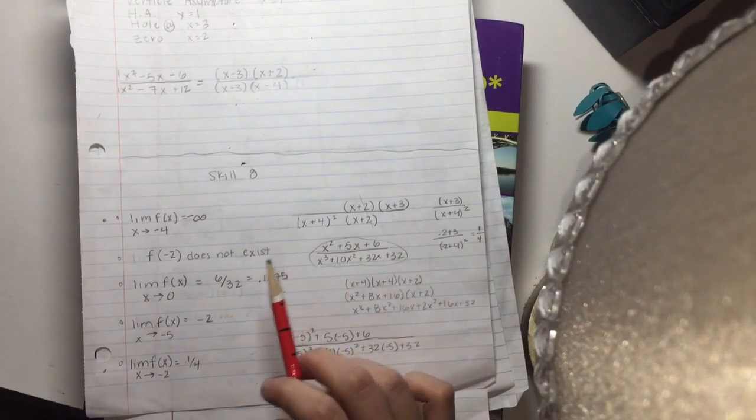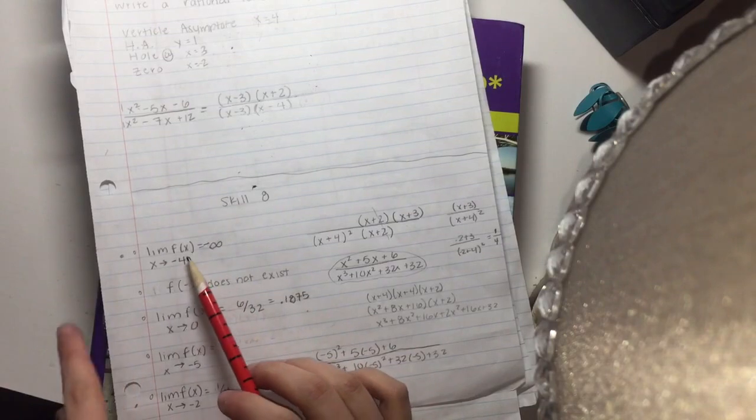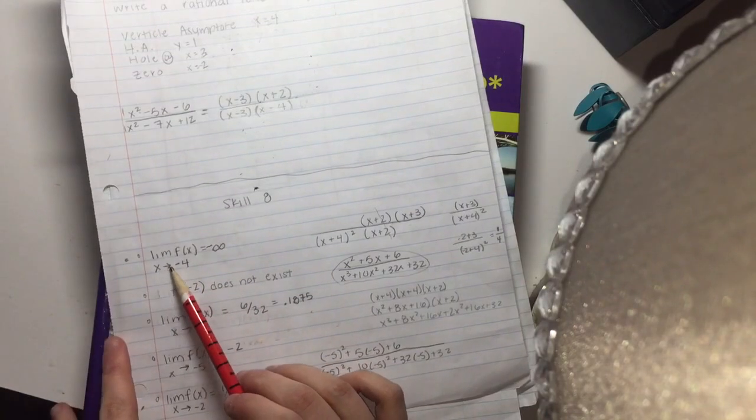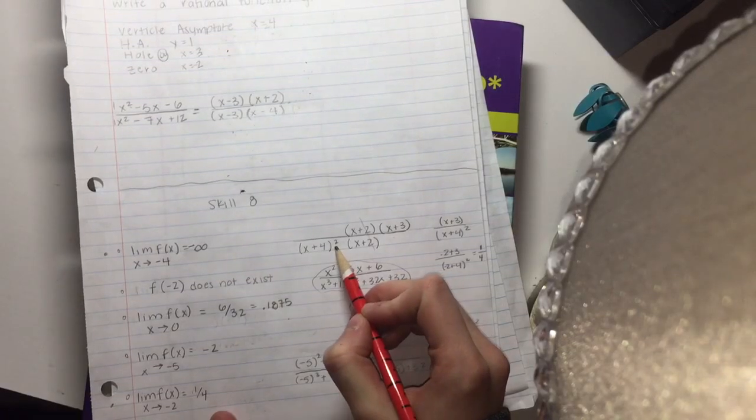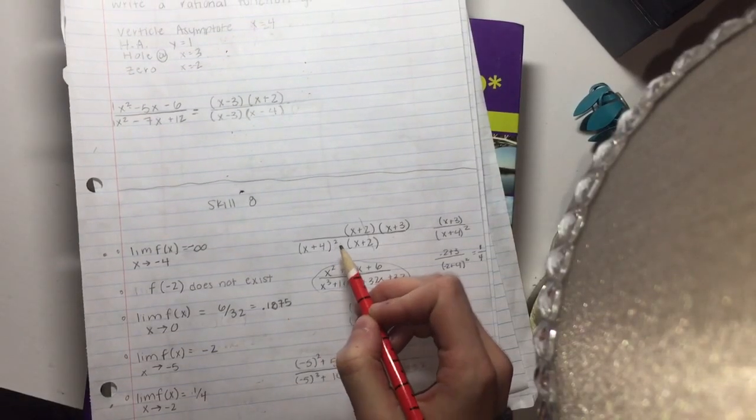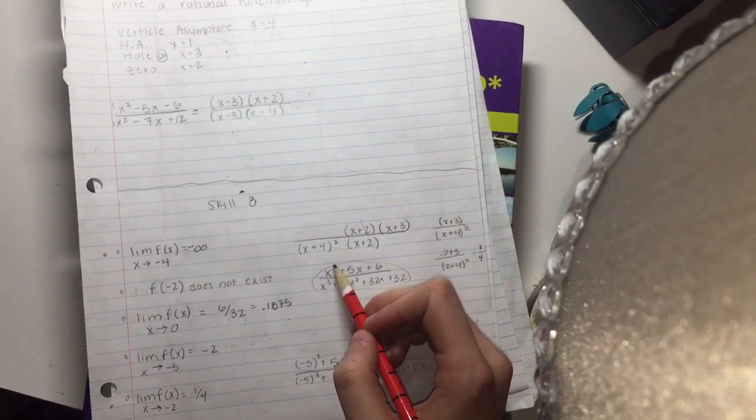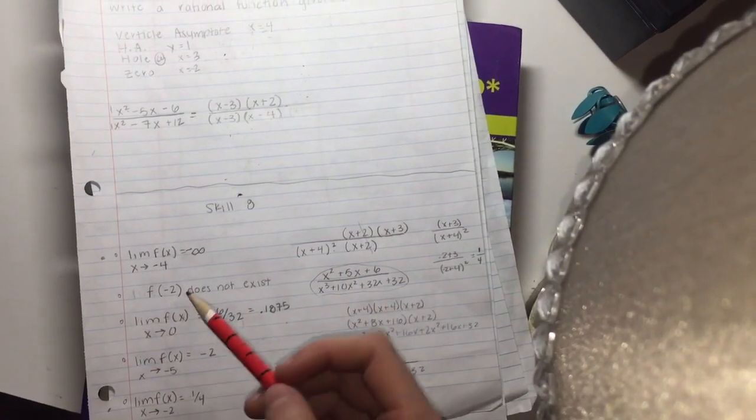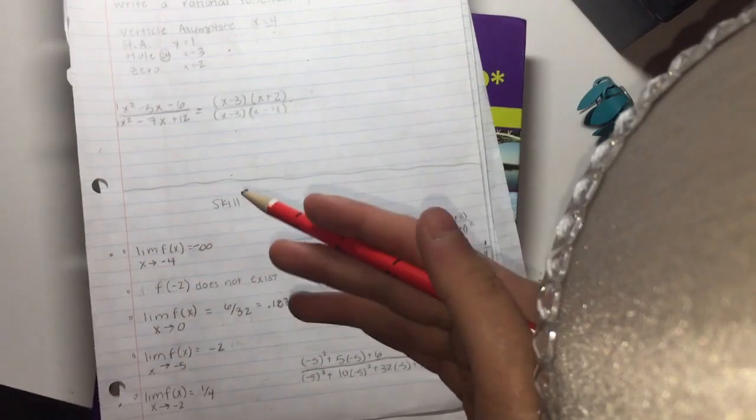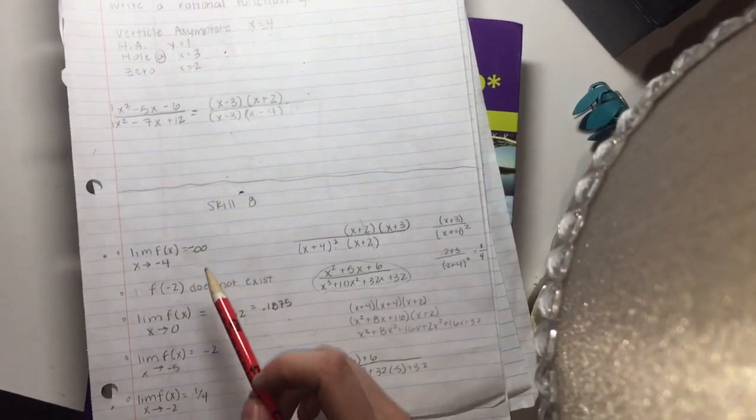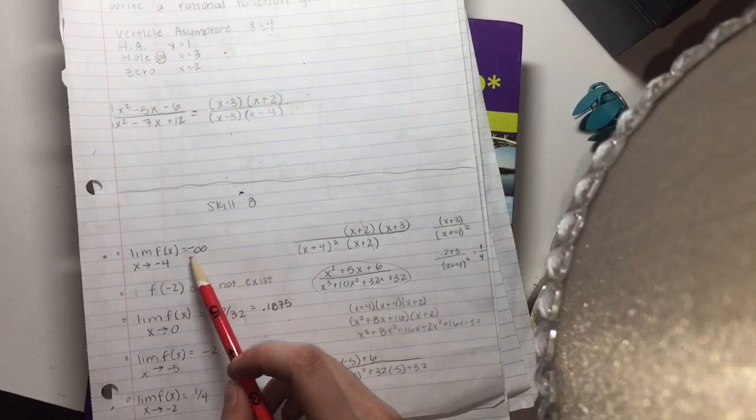So first of all, I have to find out the limit of f(x) when x is approaching negative 4. Right here, I know that since this is squared, it's going to be acting as if it's a quadratic. And since it's going to negative 4, and since I know the functions of a parabola and a quadratic equation, I know that it's going to be going to negative infinity.